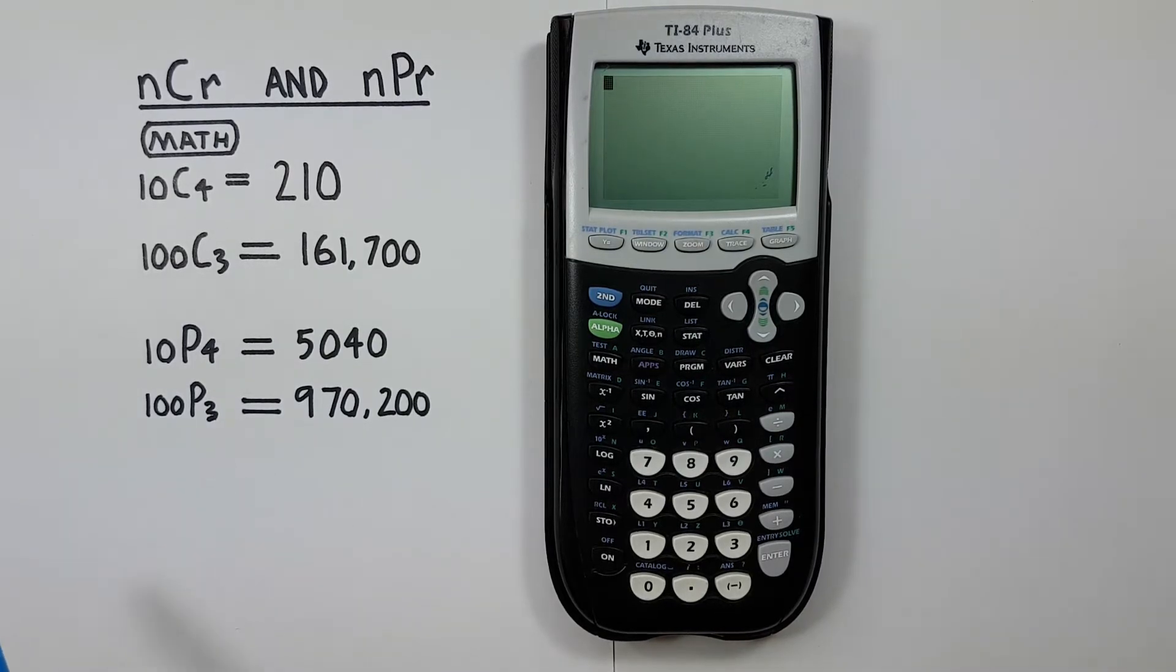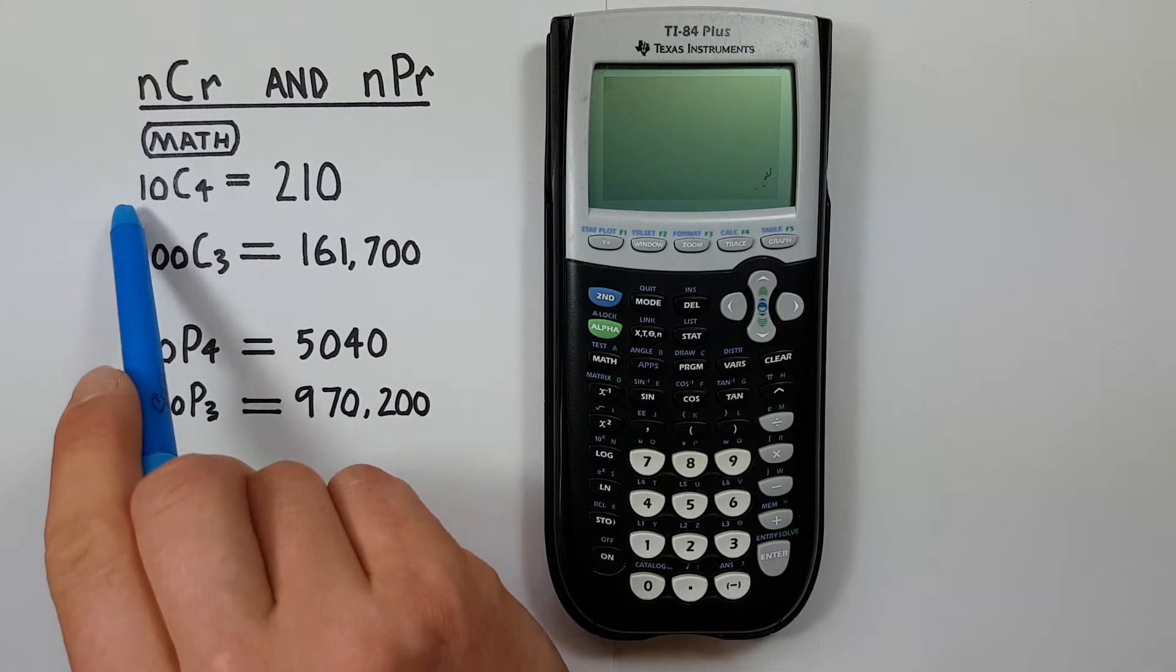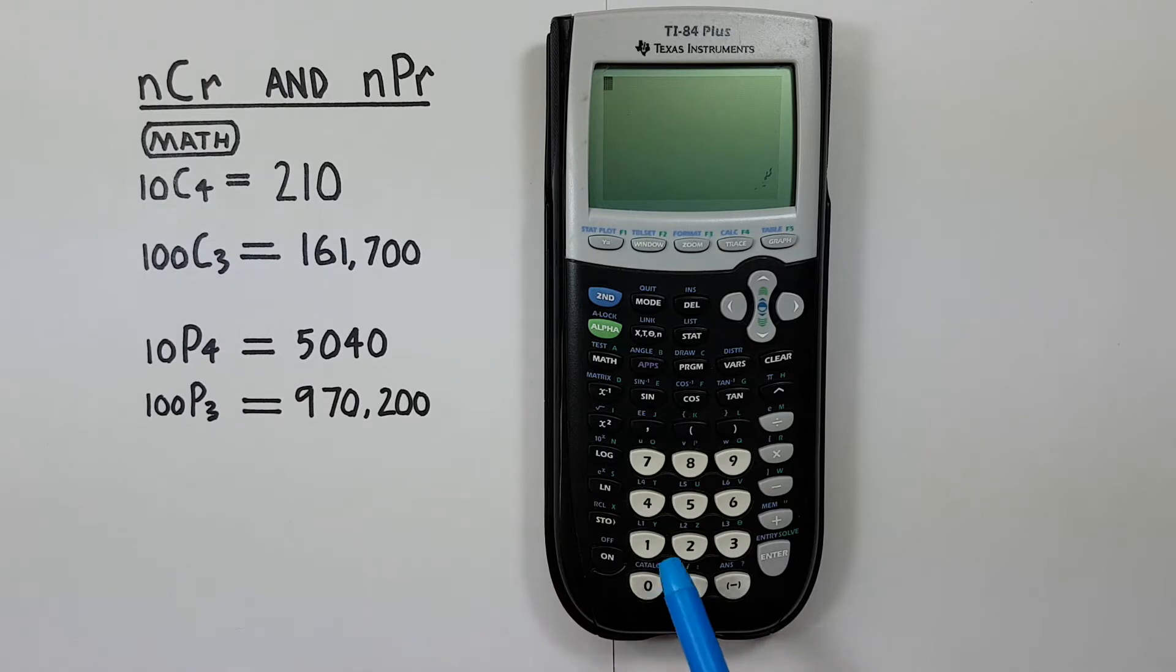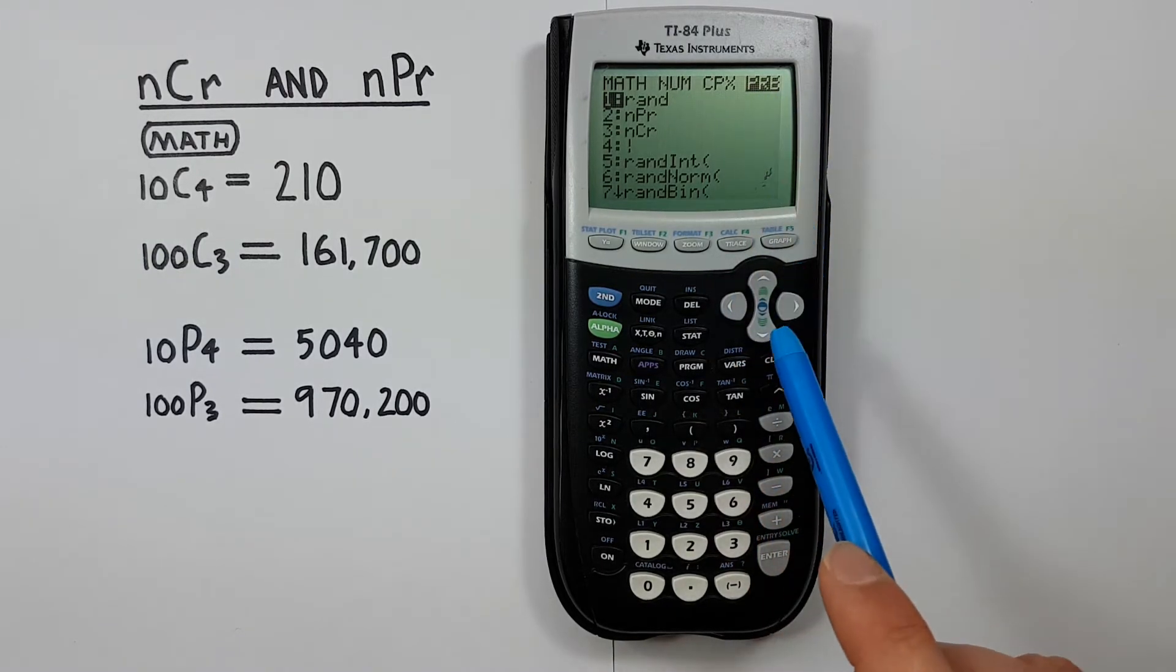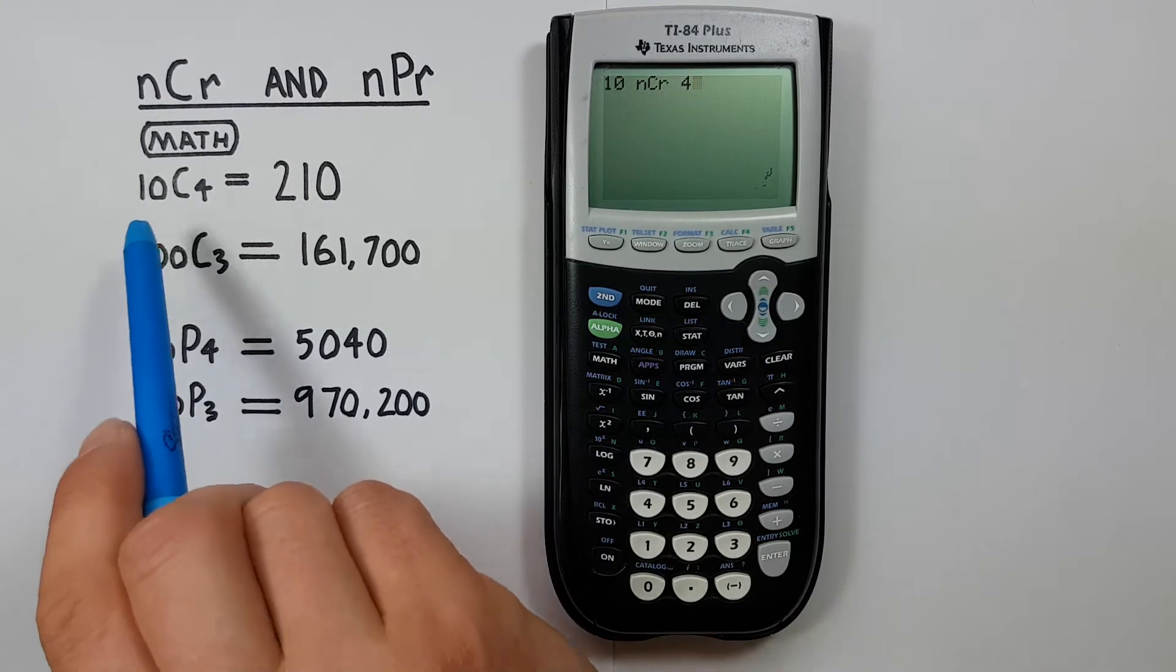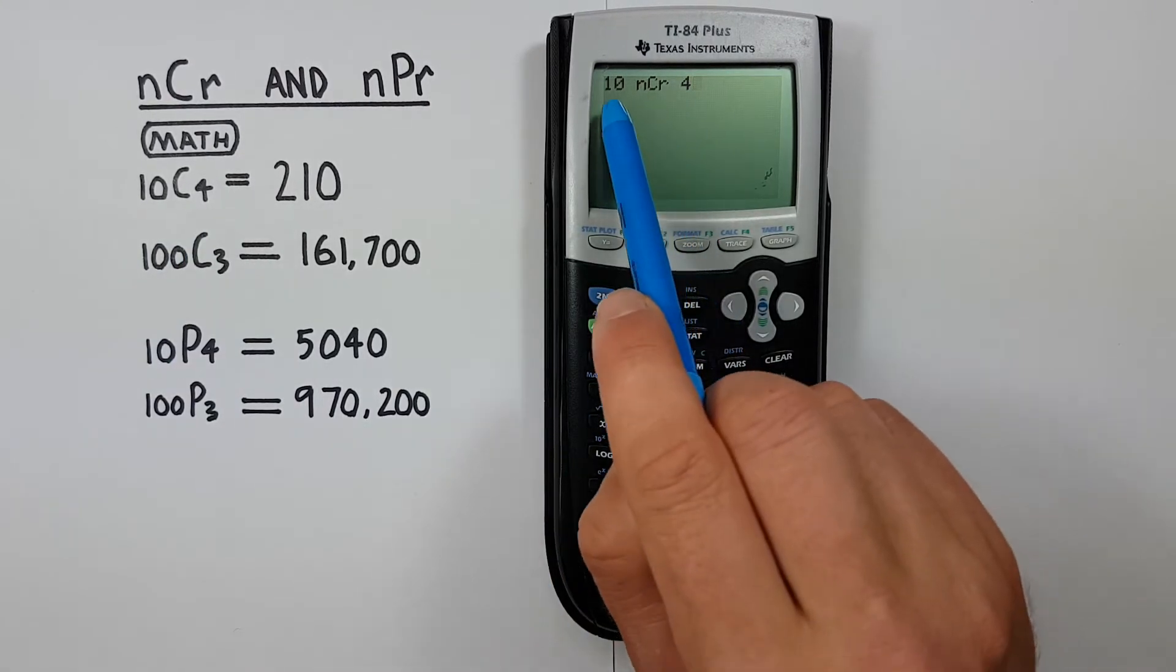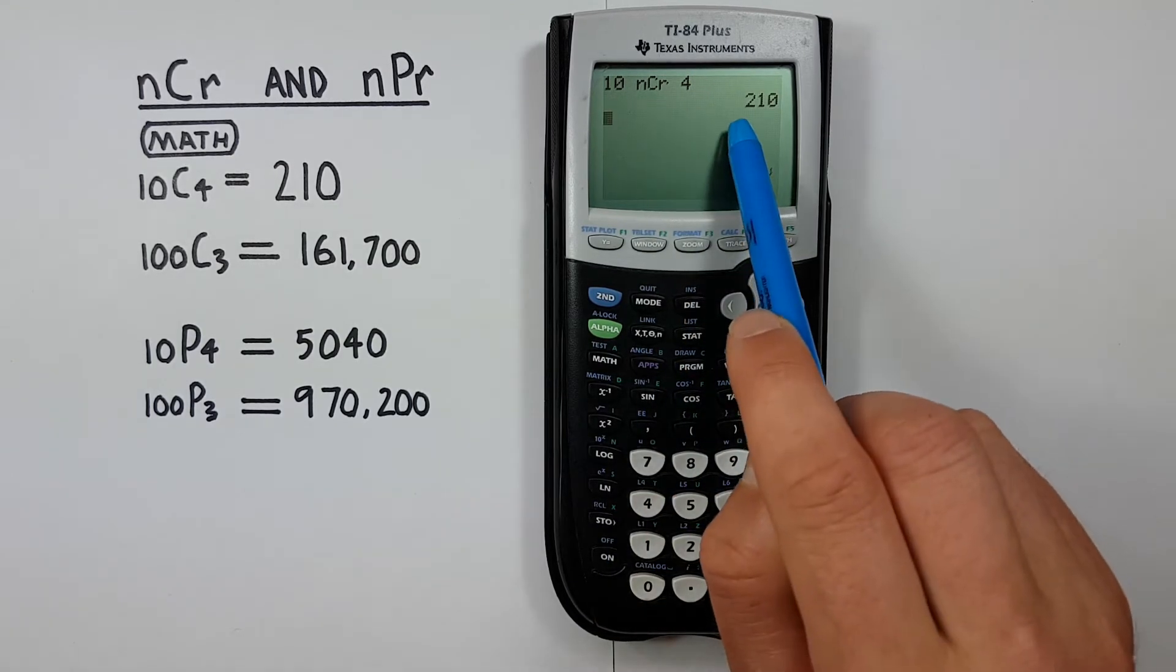Let's say we had a combination of ten choose four. To do this we start by entering the ten, or the number of objects we have, onto the screen. Then we hit the math key, scroll over to our probability menu and select combinations. Then hit four, which is the number of objects chosen. Keep in mind we have to enter the ten before we enter the nCr, or else our calculator will try to use our previous answer. Once we've had all this entered we can press enter and we get a result of 210.